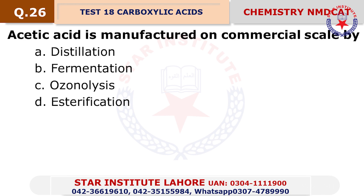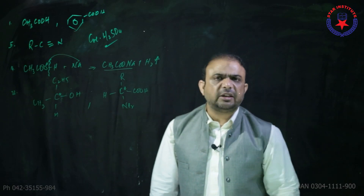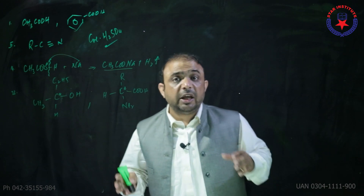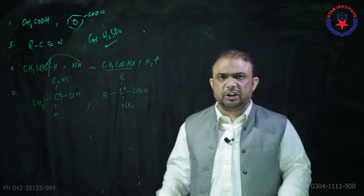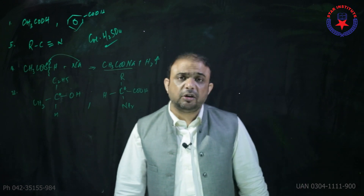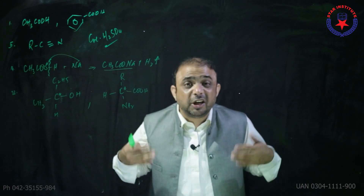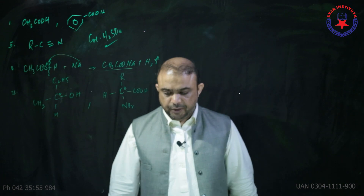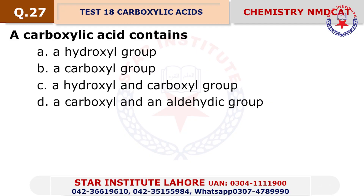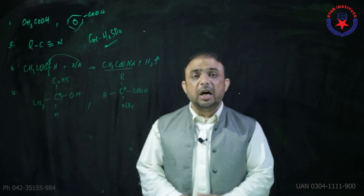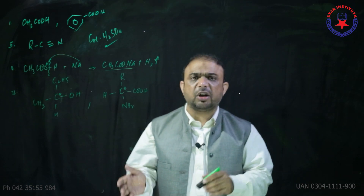Question number 26: Acetic acid is manufactured on a commercial scale by fermentation. Note that acetic acid is not directly produced by fermentation — it is produced by the oxidation of fermented alcohol, so fermentation is generally included as part of the process.